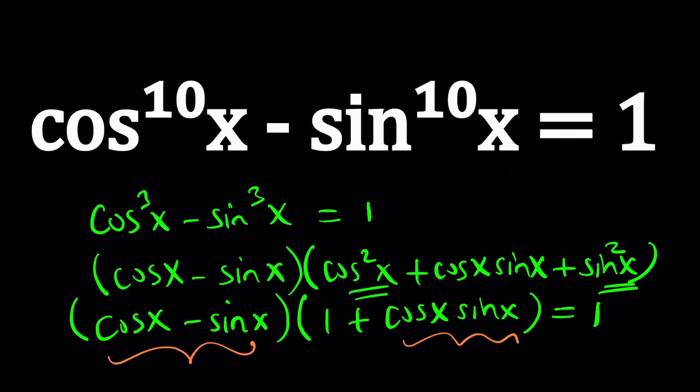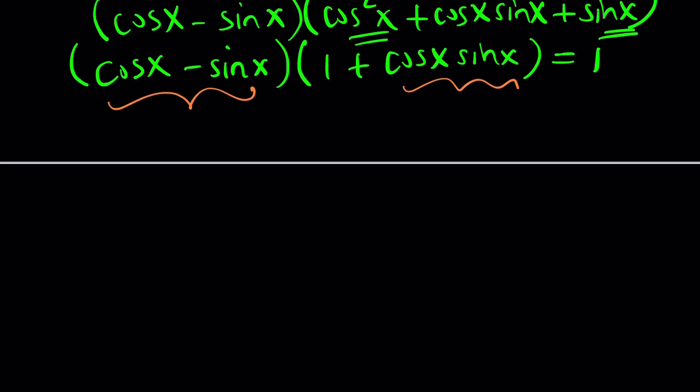So instead, we're going to be using a different approach. That's what makes this problem so non-standard. Because we're going to be using something super important. Now, sine and cosine, if x is real, then they are bounded from above and below. In other words, cosine x must be between negative 1 and 1 inclusive.